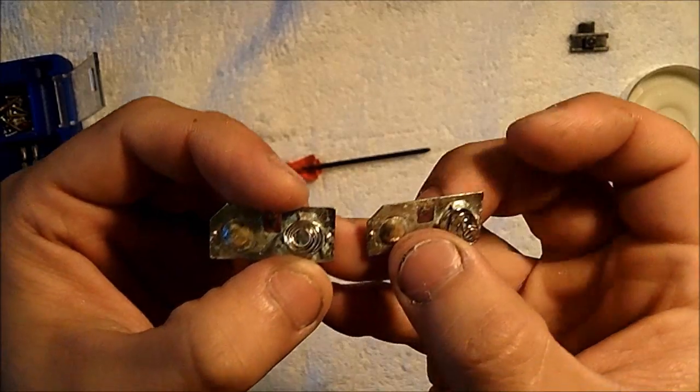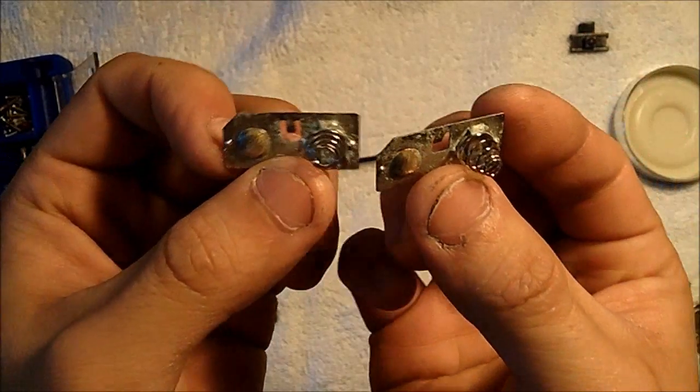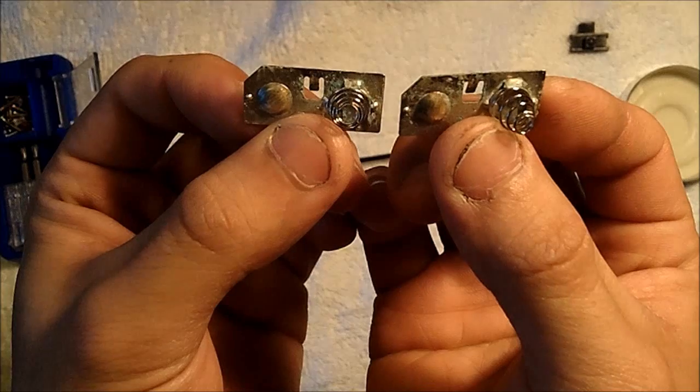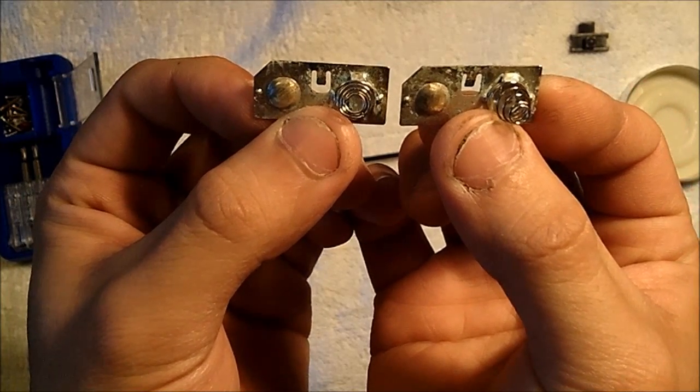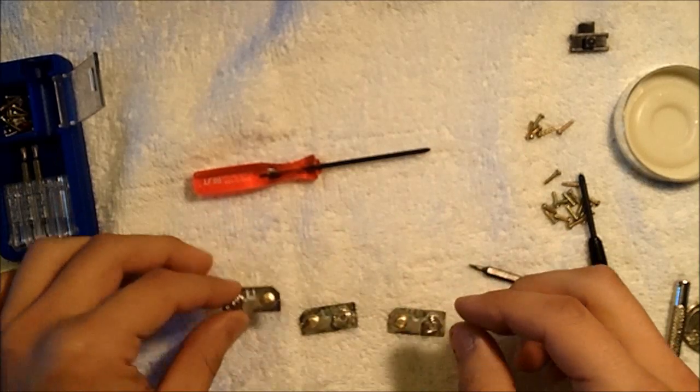To figure out which ones go on the bottom and which one goes on the top, if you look really closely here, you'll see that if you have the notches facing forward, there are two on the left-hand side.